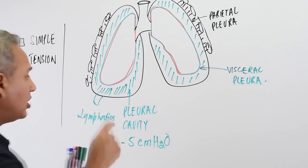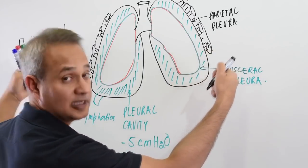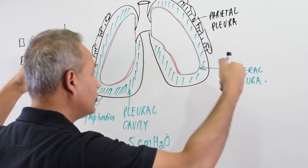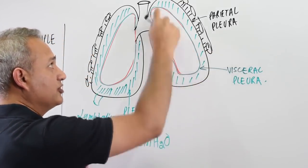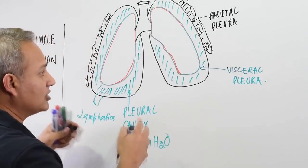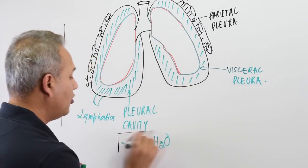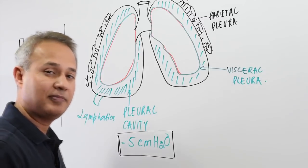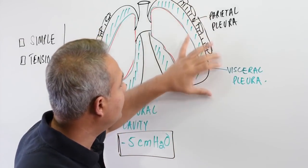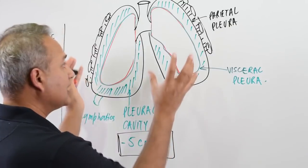The pleural cavity normally has a pressure of minus five centimeters of water. The chest cavity pulls the parietal pleura outward; the parietal pleura exerts pressure on the fluid and tries to suck it outwards; that fluid causes a suction effect on the visceral pleura, which is tightly bound to the lungs — so the lungs are pulled out. That is why there is minus five centimeters of water pressure.